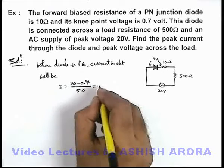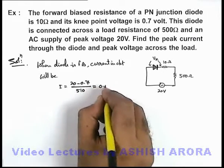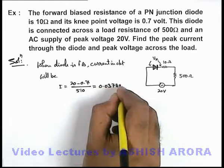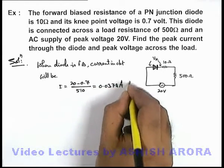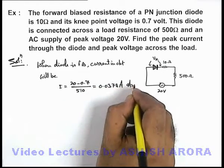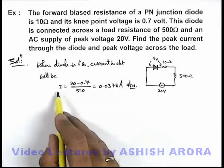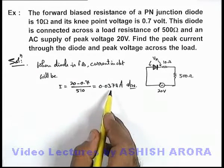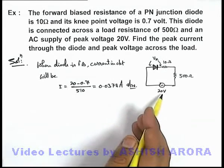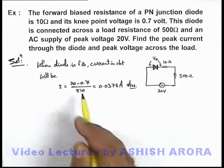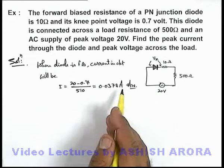On calculation, this gives 0.0378 ampere. This is the current corresponding to the peak voltage of the supply, so this will be the peak value of current.